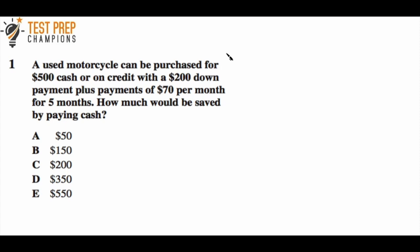Question one: A used motorcycle can be purchased for $500 cash or on credit with a $200 down payment plus payments of $70 per month for five months. How much would be saved by paying cash? Pause the video, try to figure this out, and then we'll go over it.